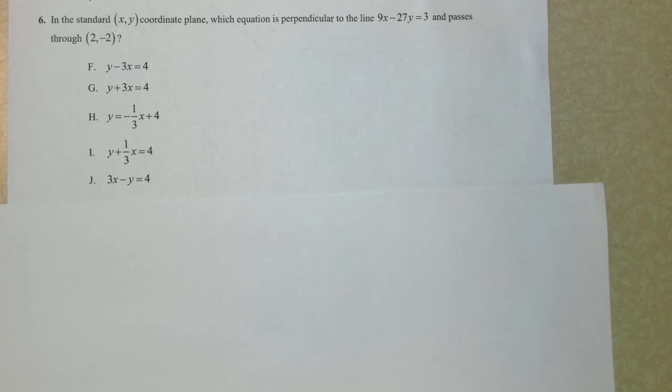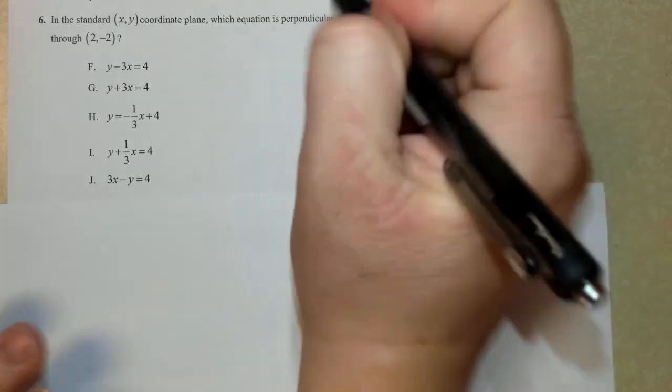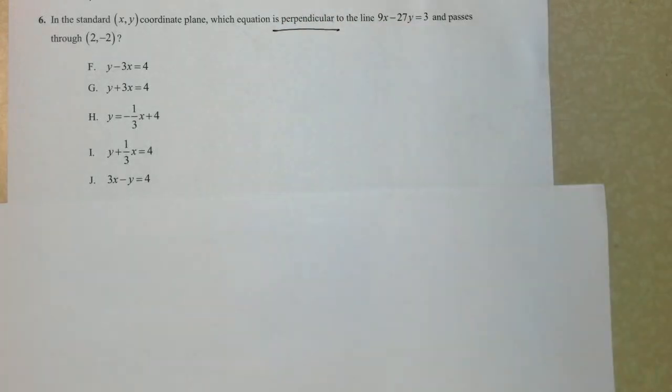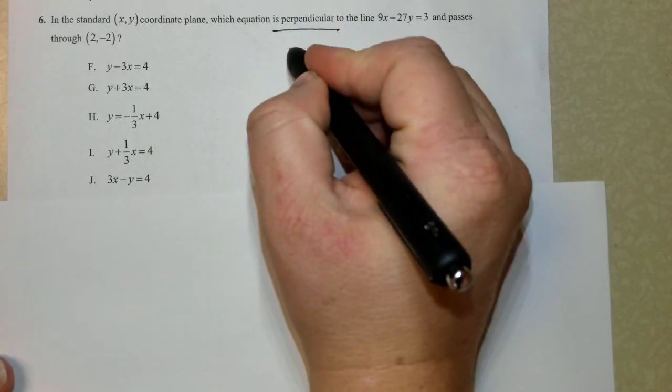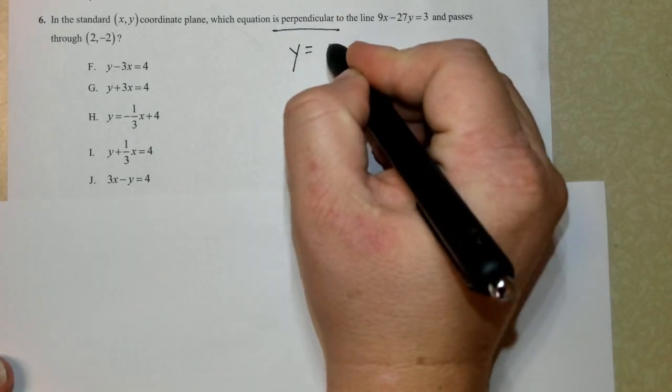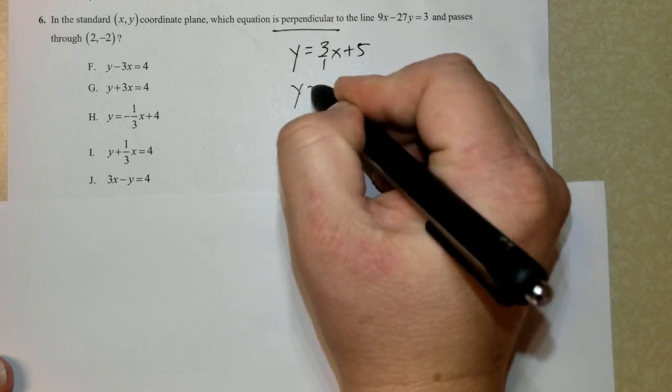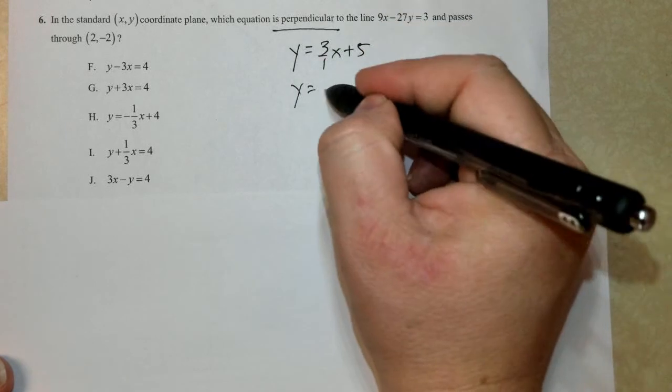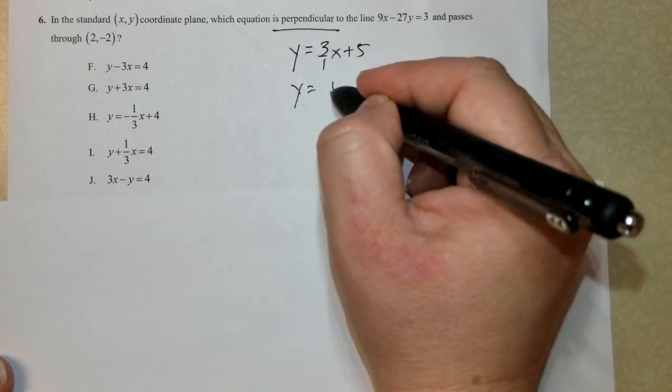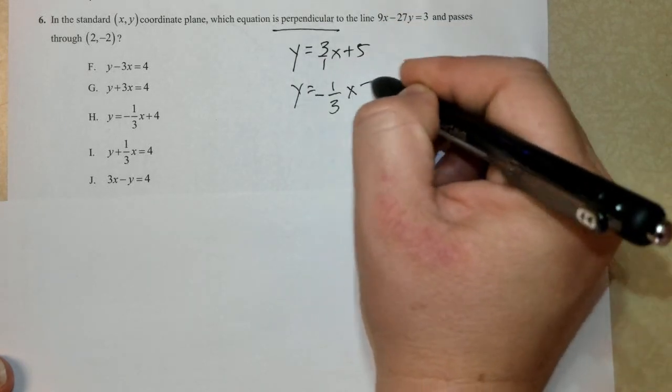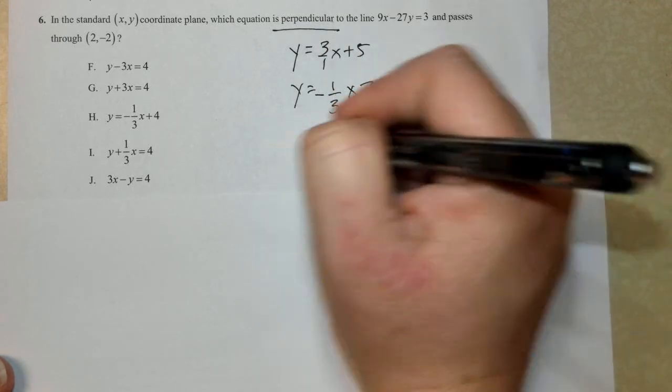Number 6 says we're working at a coordinate plane in which the equation is perpendicular to the following line, and it passes through the given point. If things are perpendicular, it means that their slopes are negative inverses. I want to show you a quick example of what this would look like. I'm making this up. So if I had 3 over 1x plus 5, I'm making this up. And I had to create one that was perpendicular. I flip it around, and I change the sign. Flip it around, change the sign. That's what we're looking for.